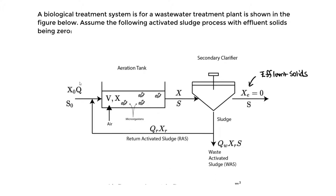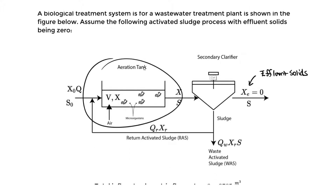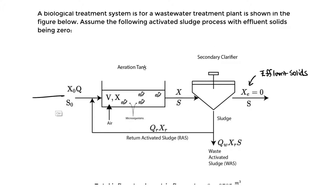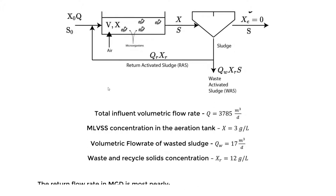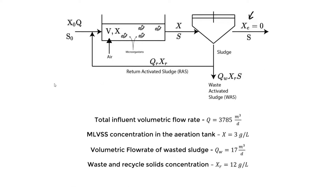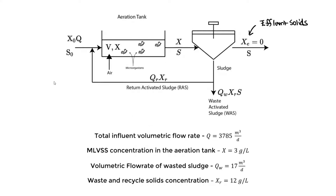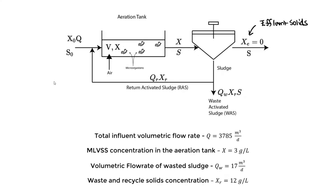We have an activated sludge process with an aeration tank and a secondary clarifier. The inlet is where we enter and the effluent is where we exit. We're given the total influent volumetric flow rate Q. The MLVSS — mixed liquor volatile suspended solids concentration — in the aeration tank is X, given to be 3 grams per liter. This X value exits the aeration tank.